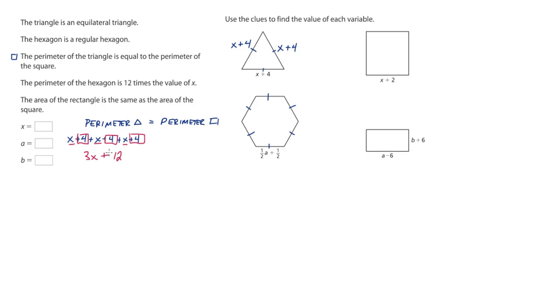So this expression that we came up with isn't going to give us an answer. It's just the expression that would be used to find the perimeter of the triangle. So now we're going to use a little bit different strategy to find the perimeter of the square. The concept is the same. We still have to add up all four sides. And the side that we know is that it's x plus 2.